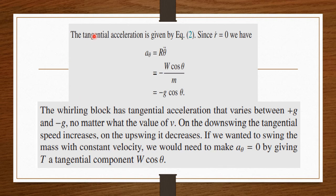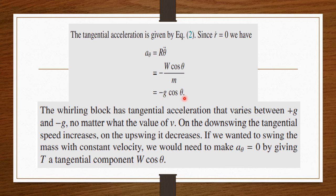The second part is the tangential acceleration given by equation number two. Since ṙ = 0, aθ = rθ̈. From that equation, aθ = −w cosθ / m, and since w = mg, the m cancels, giving aθ = −g cosθ. So aθ is a varying quantity with theta. The whirling block has a tangential acceleration that varies between +g and −g as cosθ varies from 0 to ±1, regardless of the value of v.